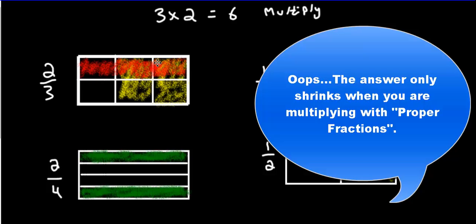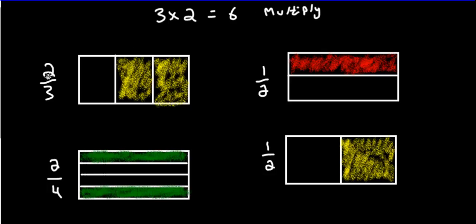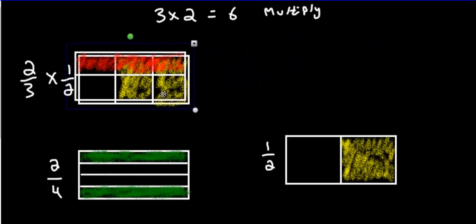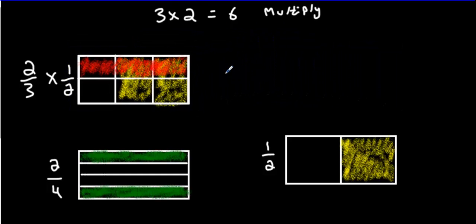Now, how do we find the answer to this equation? If I want to represent this one with multiplication, what I need to show is that I'm multiplying them. So I will say two thirds multiplied by one half. I will take these two numbers, put them side by side with a times sign in between them. And then if I multiply them, my answer is going to have six pieces. But I don't count all six pieces that are colored — I don't count one, two, three, four, five.